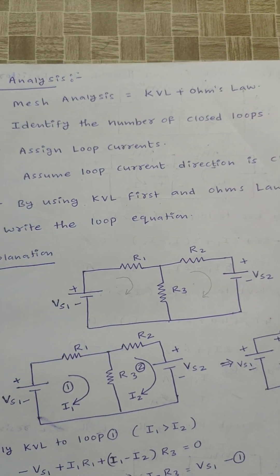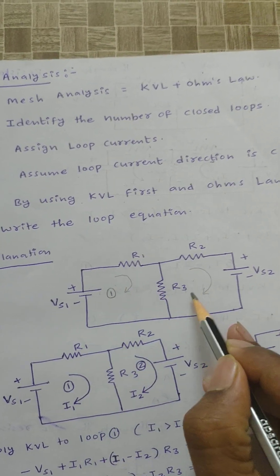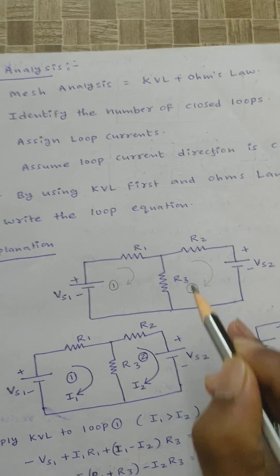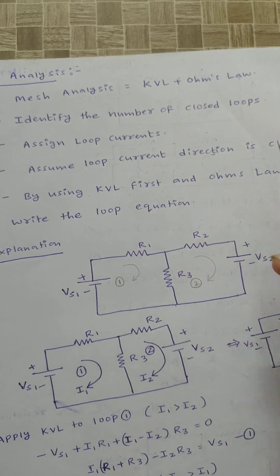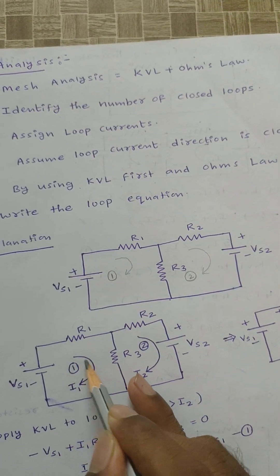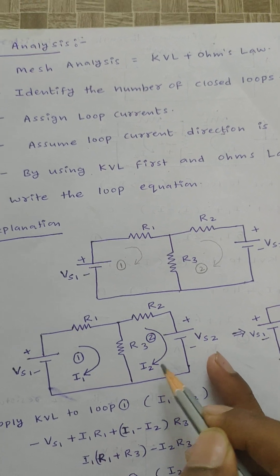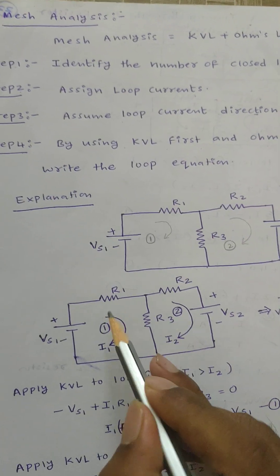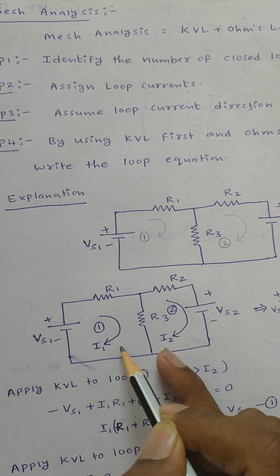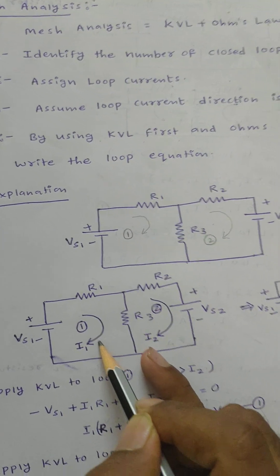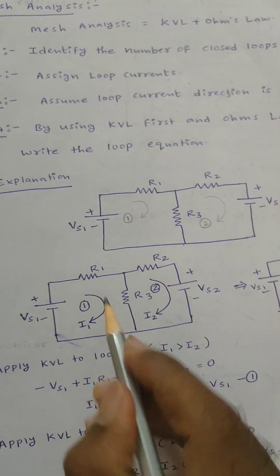This is loop one and this is loop two. Loop one current direction is indicated as i1, and loop two current as i2. Assume loop current direction is clockwise — loop one is clockwise and loop two is also clockwise. After assigning directions, apply KVL to each loop.